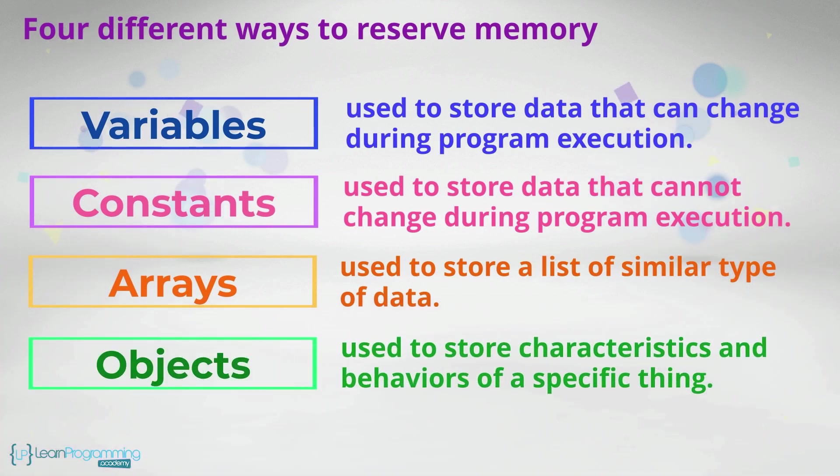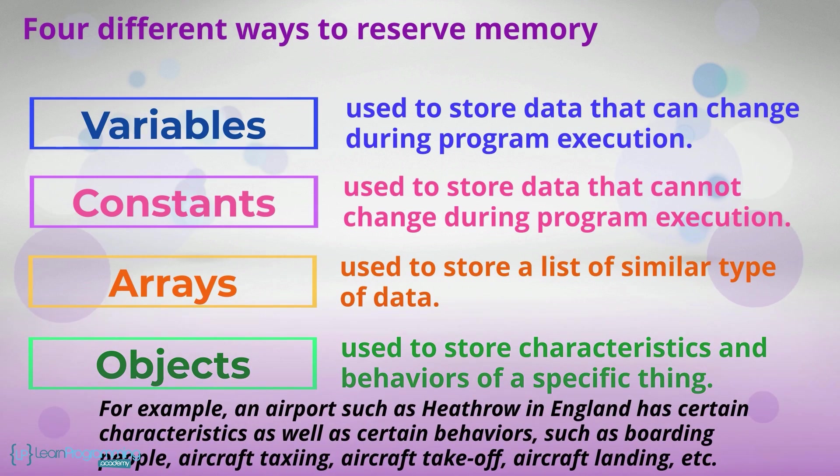Objects are used to store characteristics and behaviors of a specific thing where a thing can typically be a person, place or thing. For example, an airport such as Heathrow in England has certain characteristics as well as certain behaviors such as boarding people, aircraft taxiing, aircraft takeoff, aircraft landing etc.